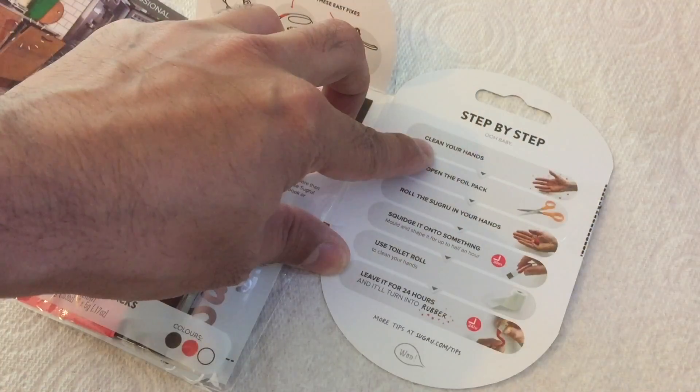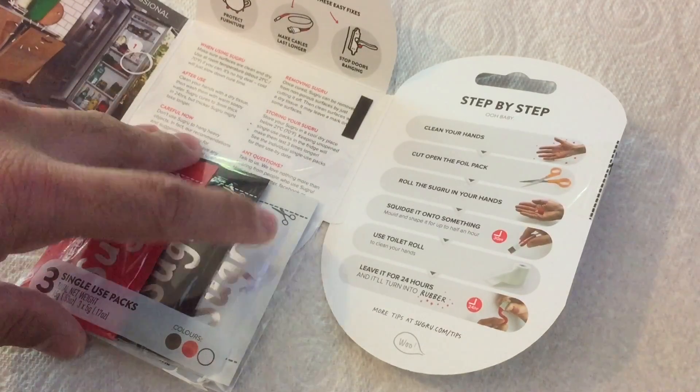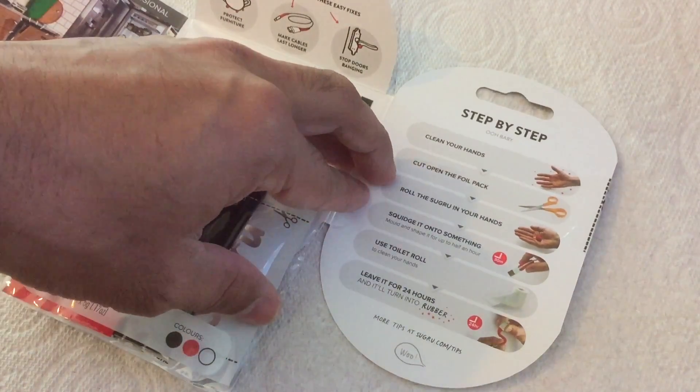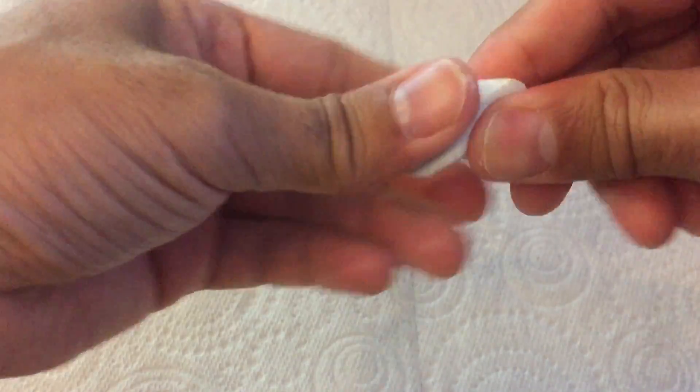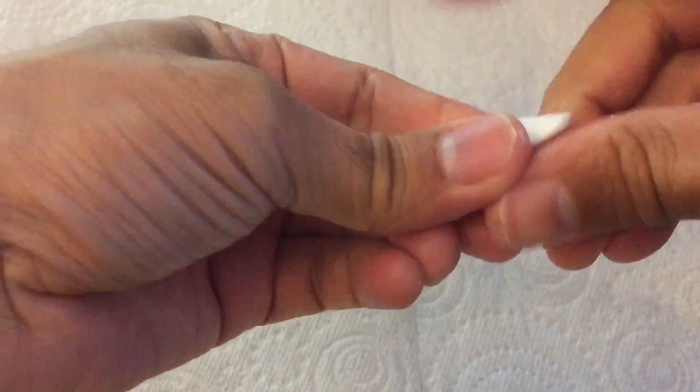First step: clean your hands. After that, open the foil pack. I'm going to use the white one and then roll the Sugru in your hands. It does say to knead it for about 30 seconds.